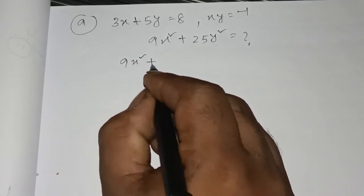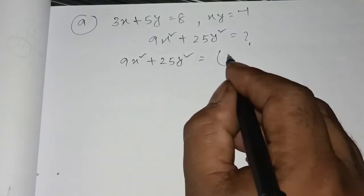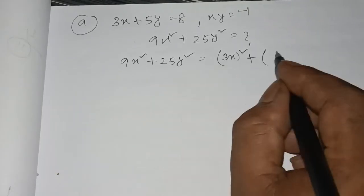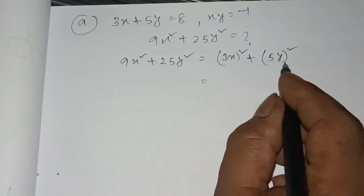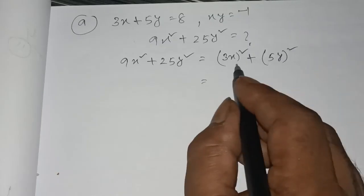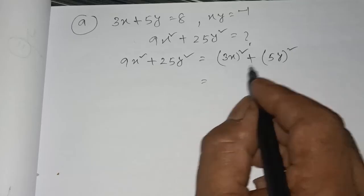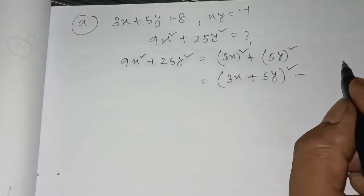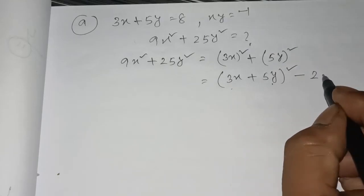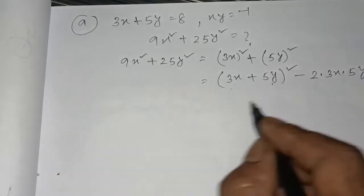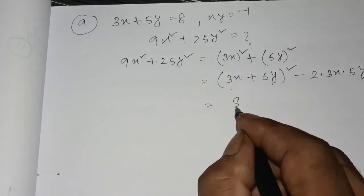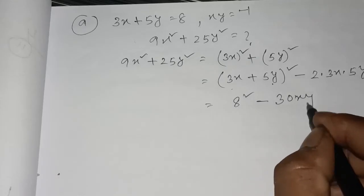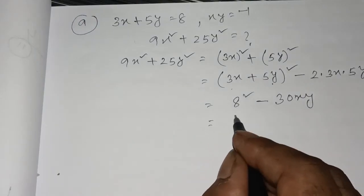We have 9x square plus 25y square. So we have 9x square, and expanding further with 5y square terms. We use 30xy. So that gives us 64 minus 30, which results in 34.